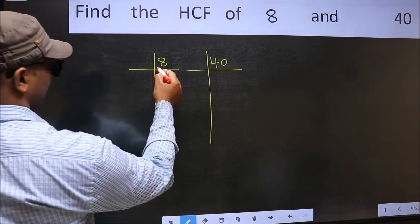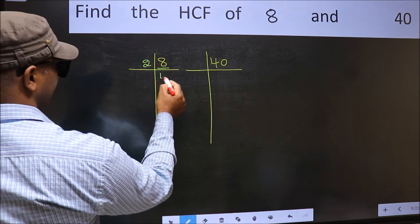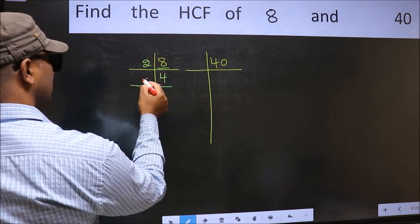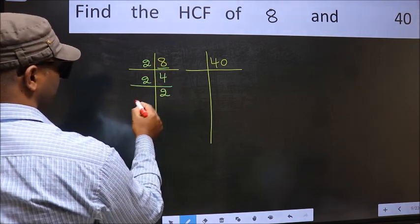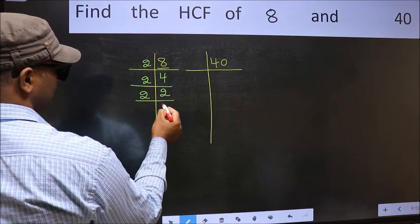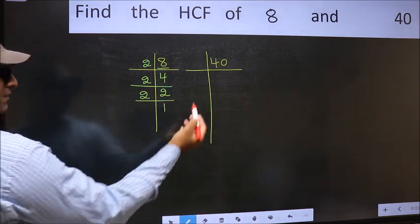Here we have 8. 8 is 2 times 4. 4 is 2 times 2. 2 is a prime number, so 2 times 1 is 2. Now the other number.